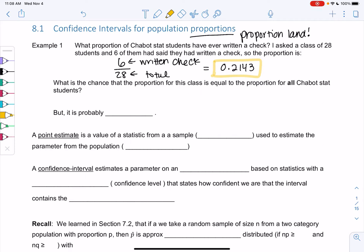What is the chance that the proportion for this class is equal to the proportion for all Chabot stat students? So what is the chance we get exactly 0.2143 for all Chabot students? And we learned last chapter that this is pretty much zero.